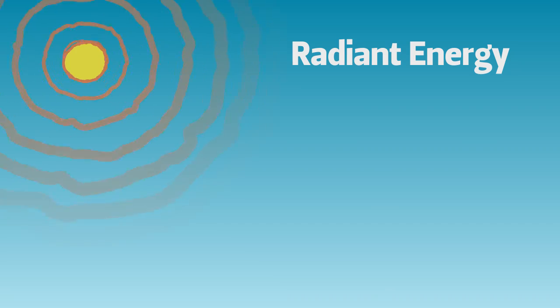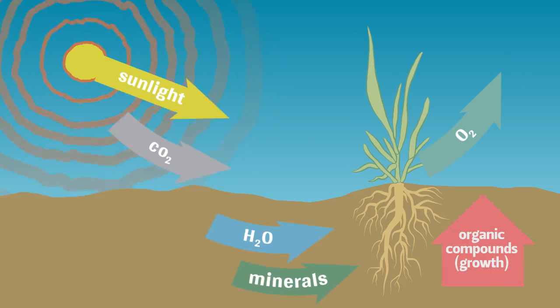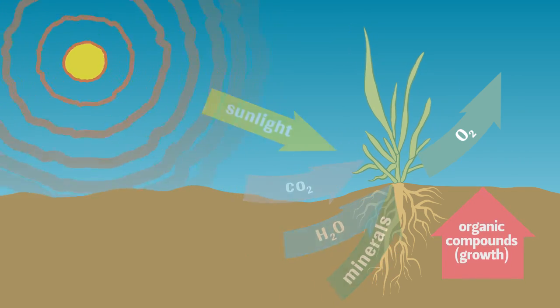Now let's take a look at the first law in action. The Sun produces radiant energy in the form of UV or ultraviolet light. When the UV light hits plants, the chlorophyll in green plants uses that energy to drive chemical reactions in the plant cells.